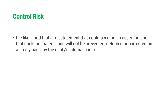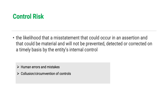The next component is control risk. Control risk is the chance or likelihood that a misstatement could occur in an assertion that could be material, and will not be prevented, detected, or corrected on a timely basis by the entity's internal control. Unlike inherent risk where we do not factor in internal controls, control risk is a function of the failure of the entity's internal control. For example, despite having internal controls, humans are still prone to errors due to fatigue. Also, collusion or circumvention of controls can occur when two persons who are supposed to be segregated work together to override the control.